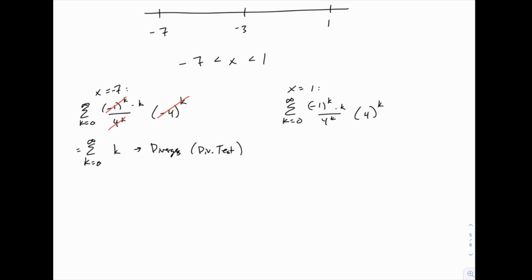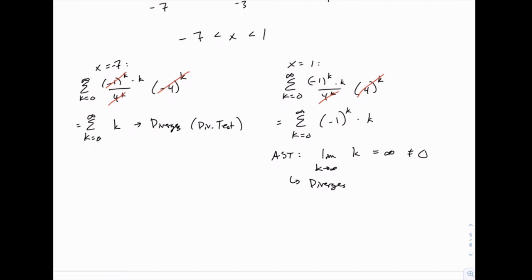And then on the right side, you can again cancel the 4 to the k. Here we wind up with something very similar. We just have negative 1 to the k times k. And if you apply the alternating series test, the first thing you check is what happens to the limit as k goes to infinity of the non-alternating part. And since that doesn't go to 0, this one also diverges in a similar way. It also fails the divergence test.